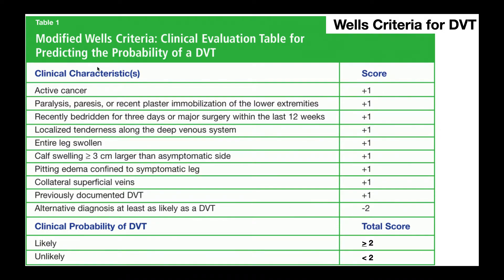The ten clinical characteristics are: number one, active cancer — cancer has a strong link with the development of DVTs. Number two, paralysis, paresis, or recent plaster immobilization of the lower extremities. DVTs tend to form in the deep veins of the legs, and so if that leg has been immobilized and hasn't been moving around, you're likely to have the formation of a DVT.